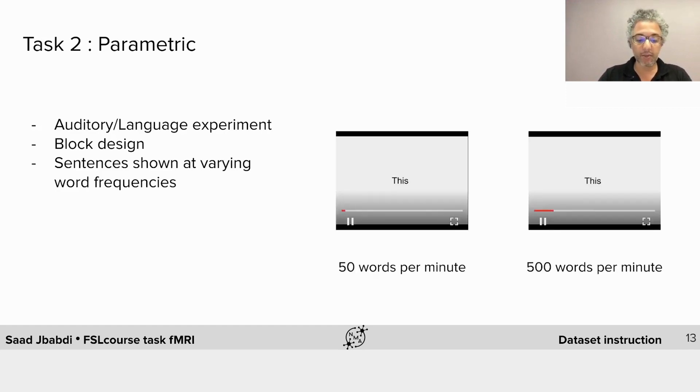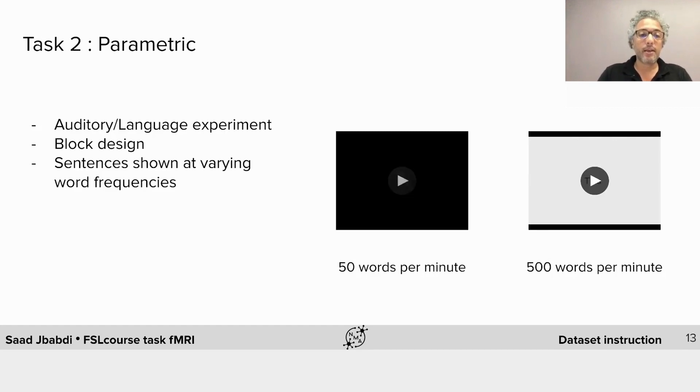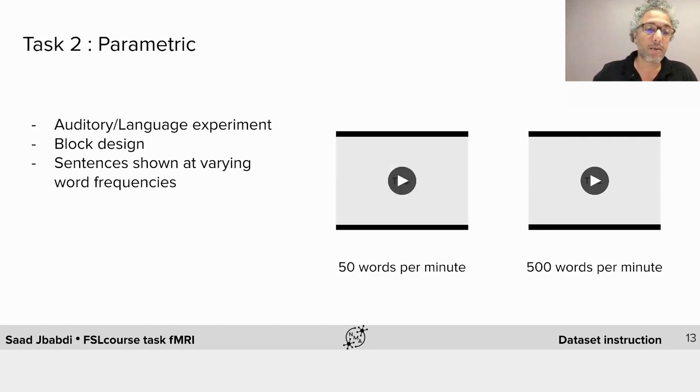Here are two examples of a block of 50 words per minute and another one for 500 words per minute. And so you can ask questions such as what brain areas are more modulated by the frequency at which the words are shown and ask whether for example that modulation is linear or quadratic.